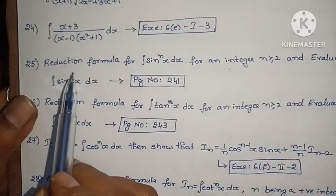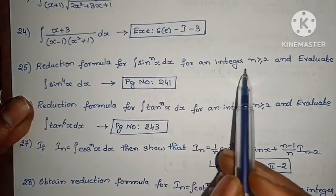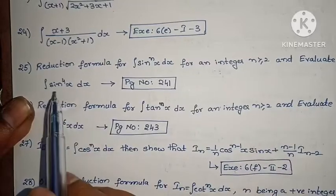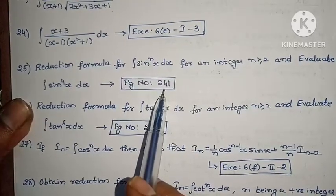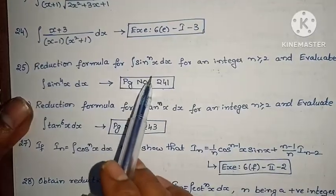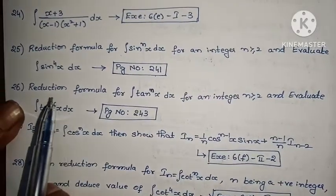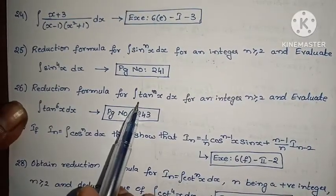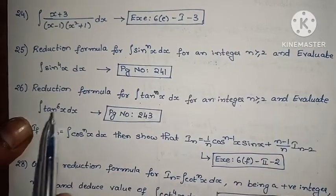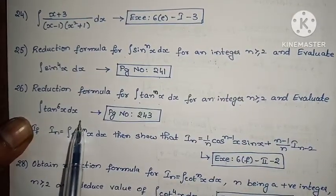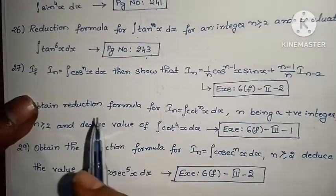Reduction formulas section. Reduction formula: integral of sinⁿx dx for integer n ≥ 2, and evaluate integral of sin⁴x dx — page number 241, example problem. Next reduction formula: integral of tanⁿx dx for integer n ≥ 2, and evaluate integral of tan⁶x dx — page number 243, example problem. Solutions already explained in linked videos.